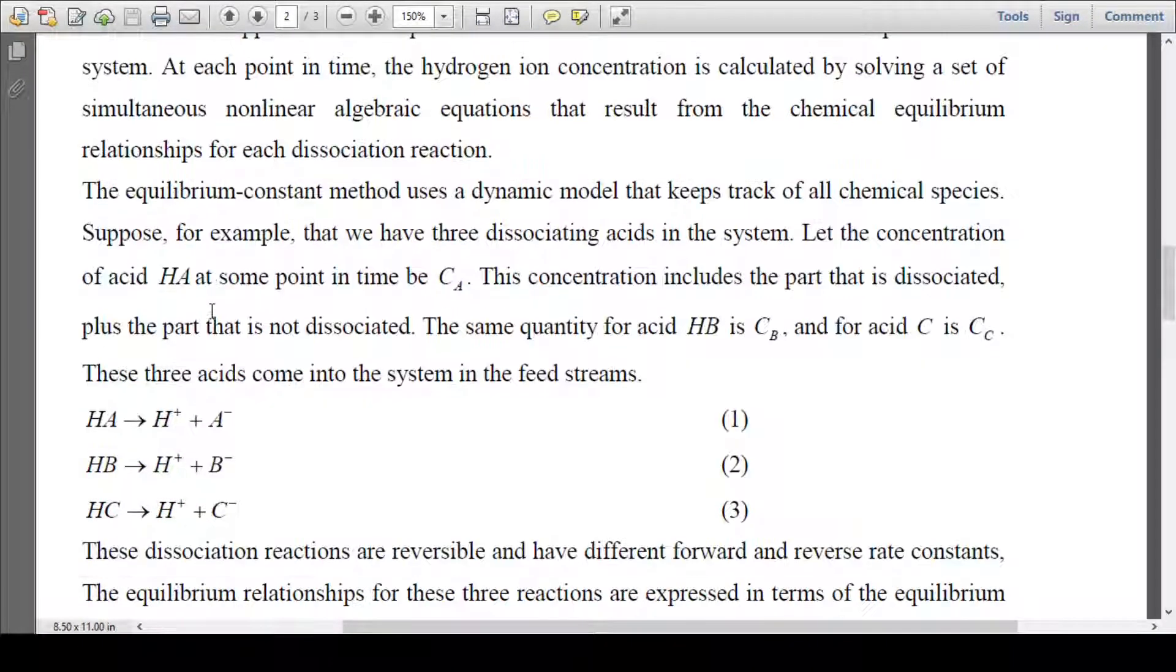Suppose we have considered three acids that are dissociating in the system. Let's say the first acid is HA and its concentration at some particular time is CA. CA includes actually both the concentration dissociated plus undissociated.